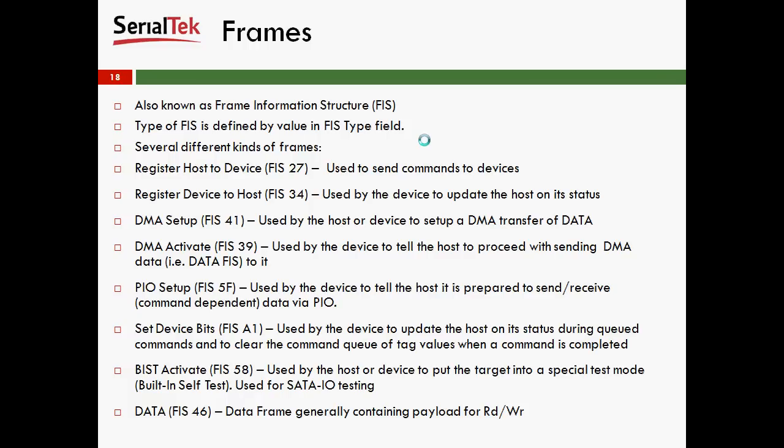There are several kinds of frames in Serial ATA. The register host to device, that's a FIS-27. This is used essentially to send commands to devices. A register device to host, or a FIS-34, is used by the device to update the host on its status. You may also hear it referred to as a signature FIS. The DMA Setup, or FIS-41, is used by the host or device to set up a DMA transfer of data.